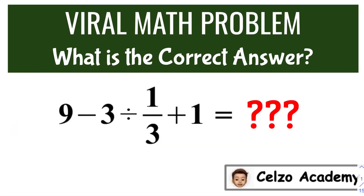Simplifying numerical expressions is not a difficult topic at all in mathematics, but people are always having debates on what is the right answer. It is extremely important to follow the order of operations in getting the right answer. This type of question is not based on how you interpret the expression. So what do you think is the answer to this problem?